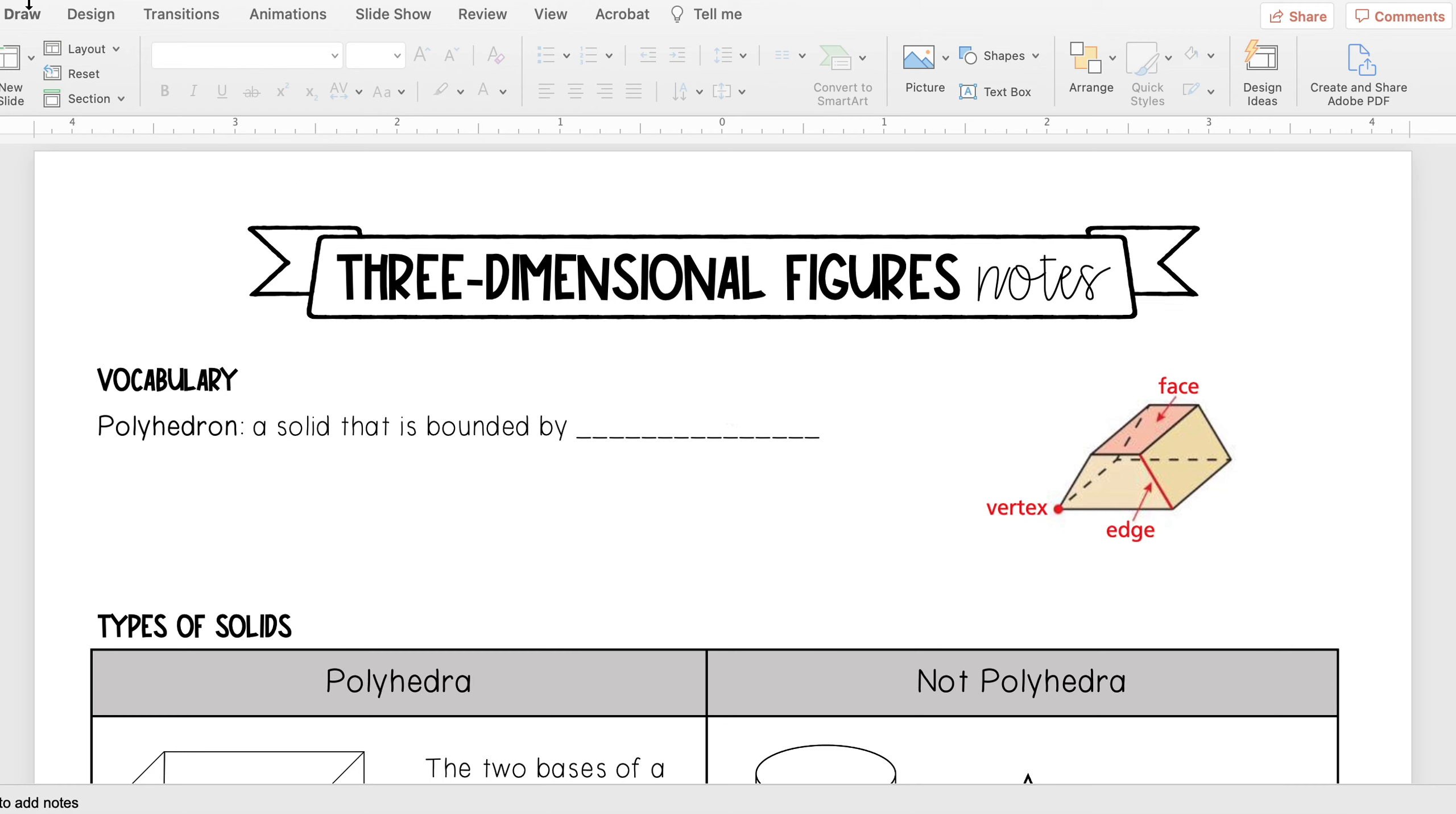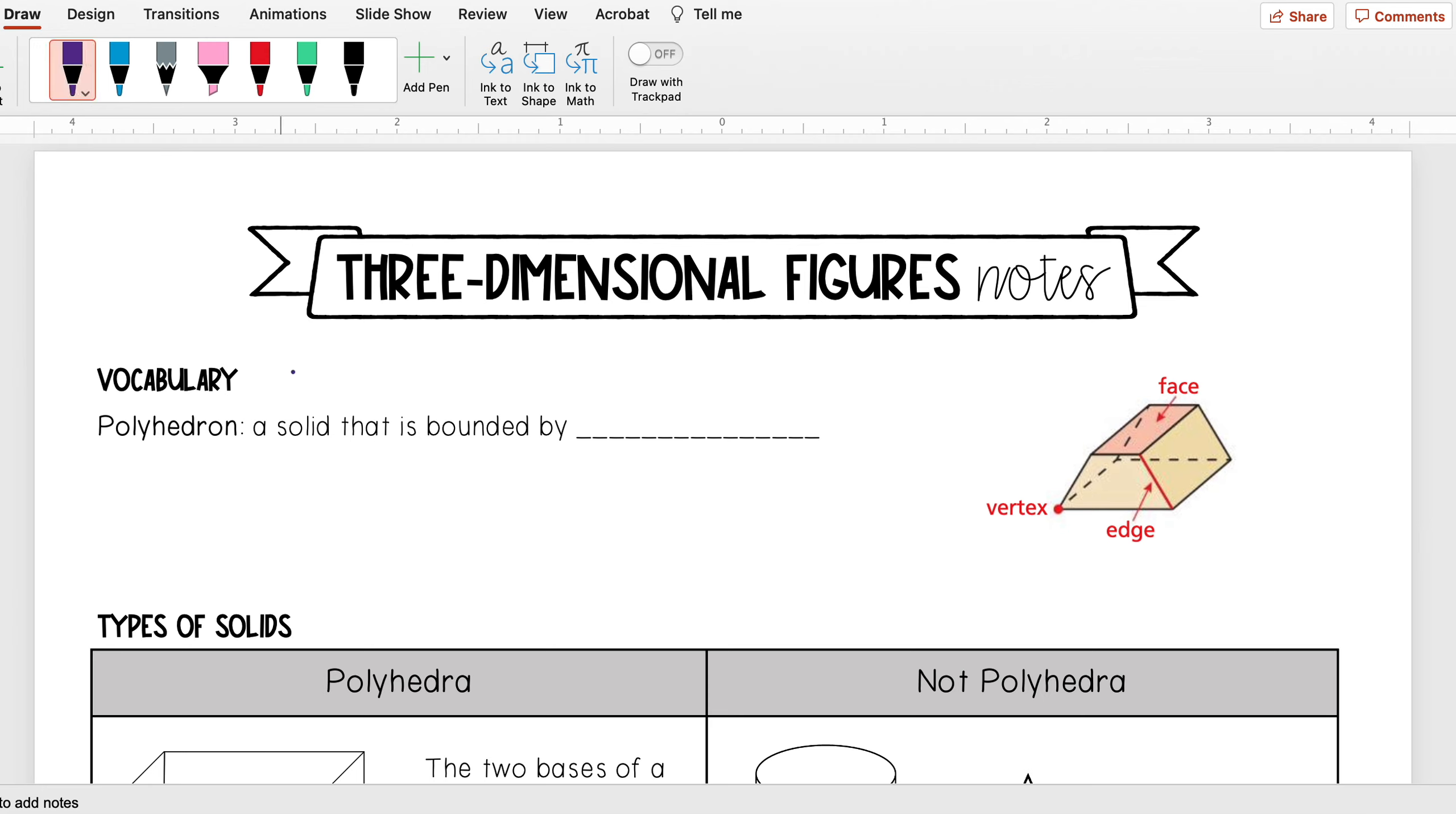Hello everyone. Today we will be learning about three-dimensional figures. For some vocabulary, we have something called a polyhedron, and a polyhedron is a solid that is bounded by polygons, and these are also called faces.